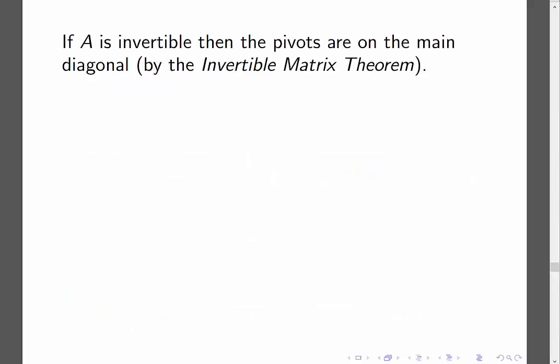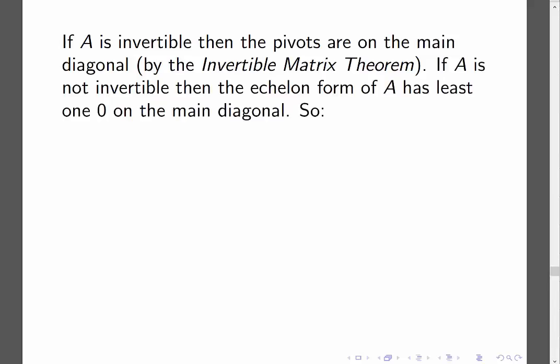So if A is invertible, then the pivots are on the main diagonal. That's by the invertible matrix theorem. And if A is not invertible, then the echelon form of A has at least one 0 on the main diagonal. And that allows me to say that the determinant of A is going to be equal to 0 if A is not invertible. That's the second part.